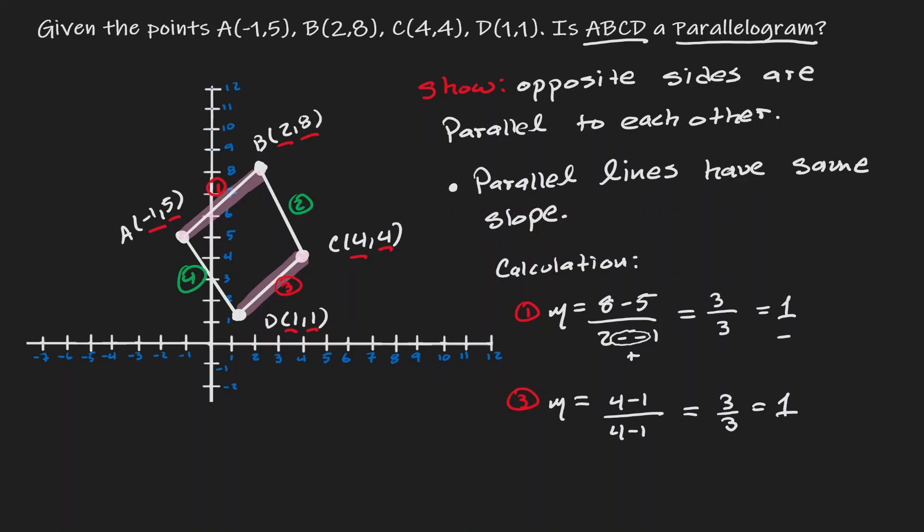Notice that line one and line three have the same slope. Therefore they are parallel. Now let's find the slope of side two and the slope of side four. If they're parallel as well, then we know we have a parallelogram.